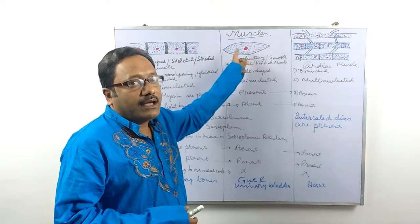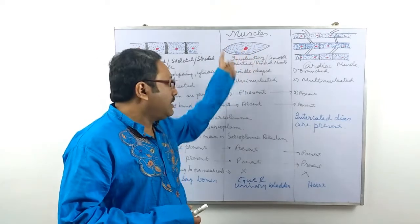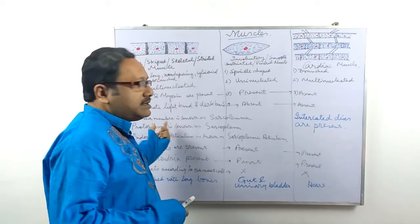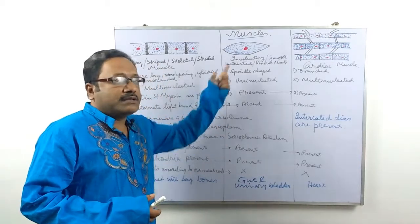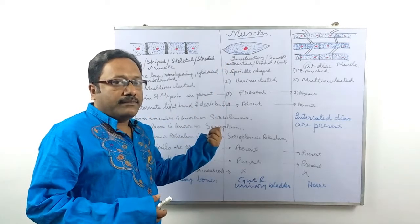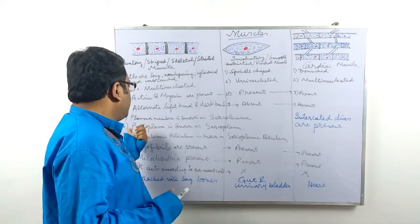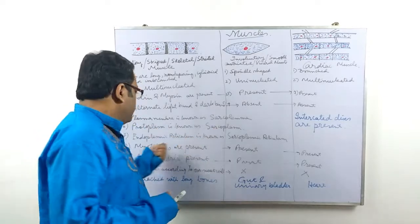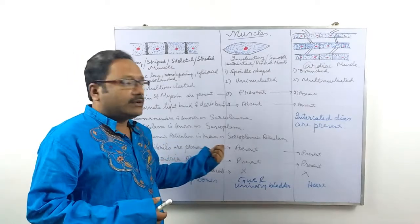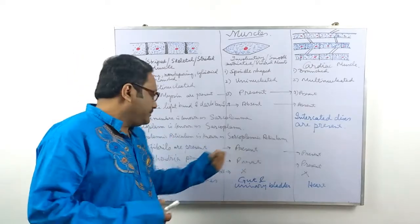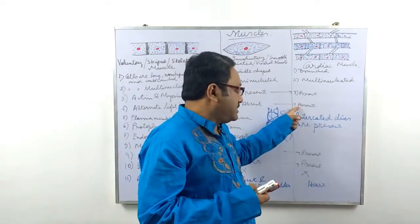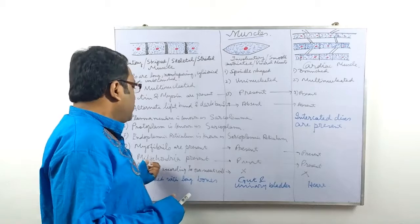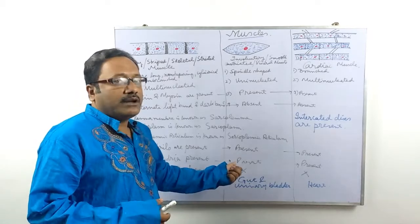Alternate light band and dark band are absent. The plasma membrane of the muscle is called sarcolemma. Point number six: protoplasm is called sarcoplasm. Endoplasmic reticulum is known as sarcoplasmic reticulum. Myofibrils are absent. Mitochondria is also present.